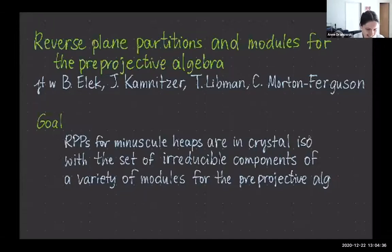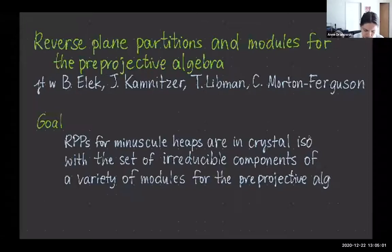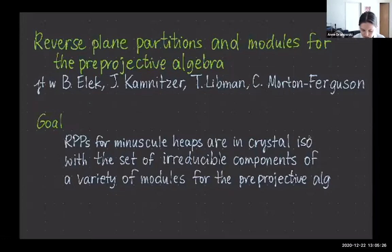So reverse plane partitions and all that other stuff — modules for the pre-projective algebra. This talk is on work in progress being written up, joined with Balash Ellick, Joel Kamnitzer, Tani Lipin, and Calder Morton-Ferguson. The main result of the paper being written up is showing that these reverse plane partitions, which are combinatorial gadgets abbreviated as RPPs, are a model for minuscule crystals — more precisely for minuscule heaps. We can define these RPPs, and that set is in crystal isomorphism with irreducible components of a variety of modules for the pre-projective algebra.